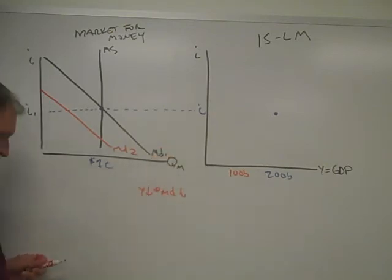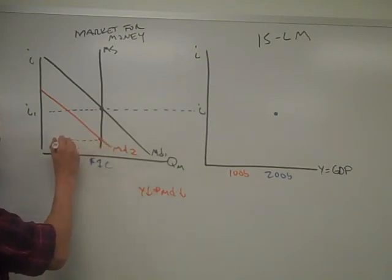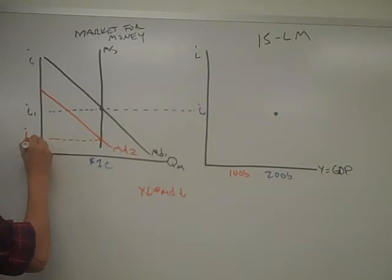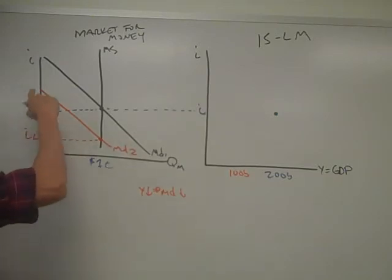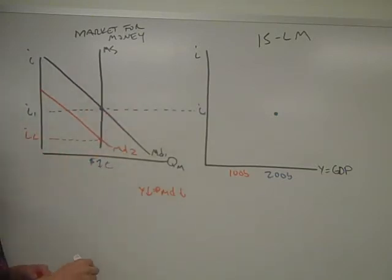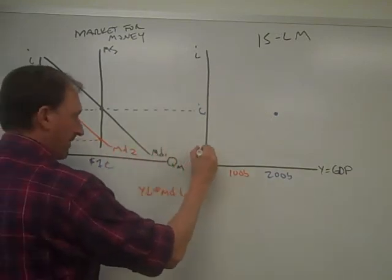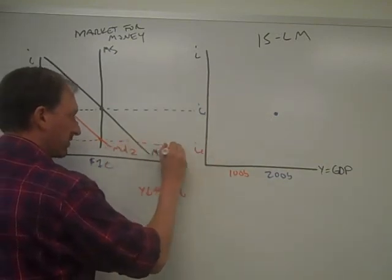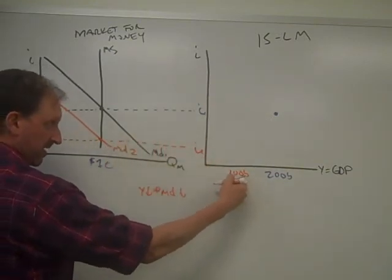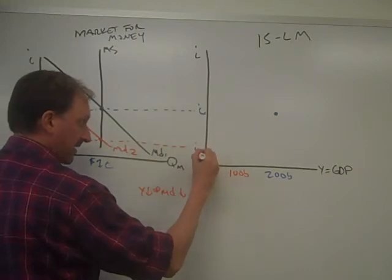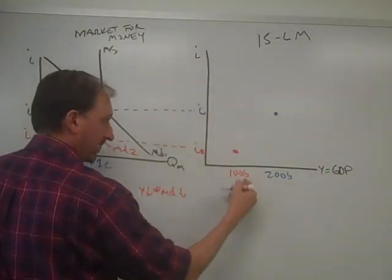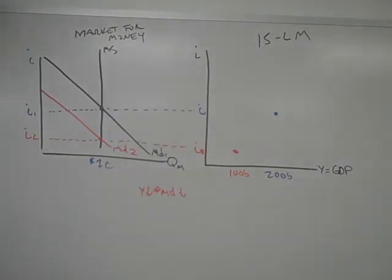And then from there, money supply hasn't changed. We're just moving money demand. We get this new point of intersection. And I2 becomes equilibrium interest that settles or satisfies the market for money. And we'll add that over here just to have a corresponding number. So if GDP is $100 billion, then interest rates are I2. And at that point, $100 billion and I2, maybe that's 3%, are on this LM curve or on this line.